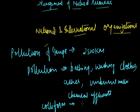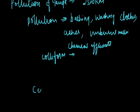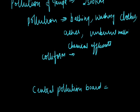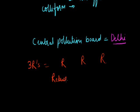The Central Pollution Board is situated at Delhi and is working for the control of pollution in our country. There are three R's principle. The three R's mean: the first R is for Reduce, the second R is for Recycle, and the third R is for Reuse.